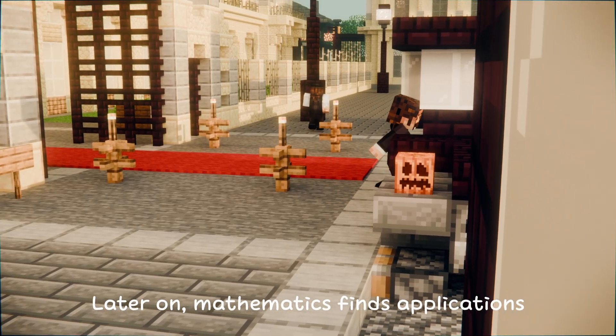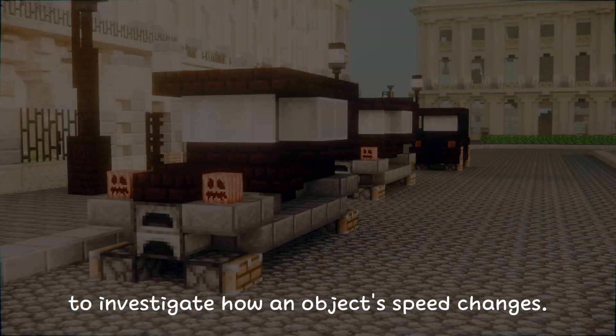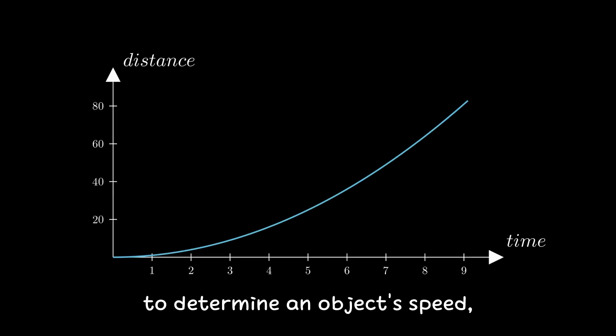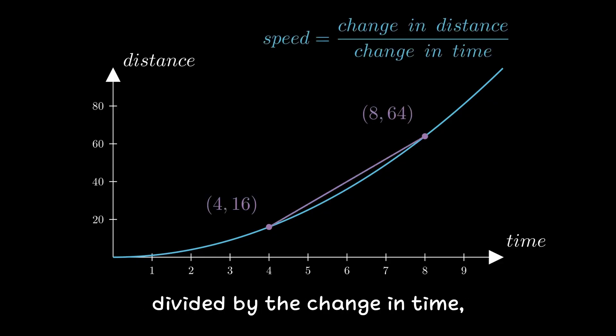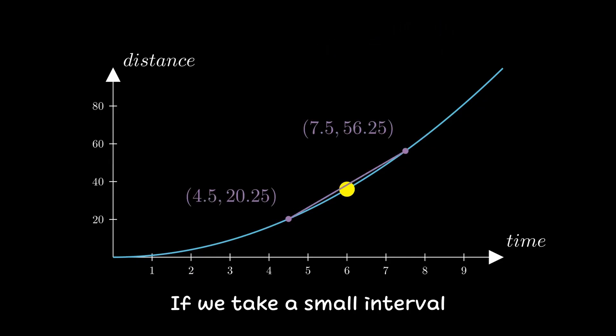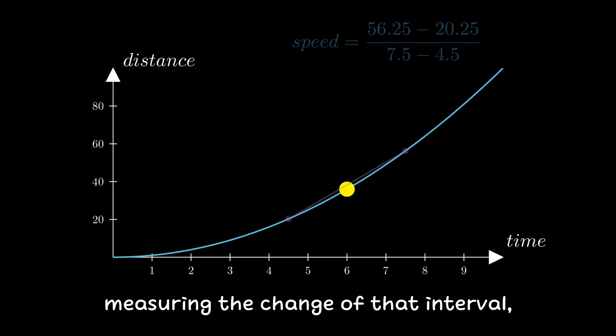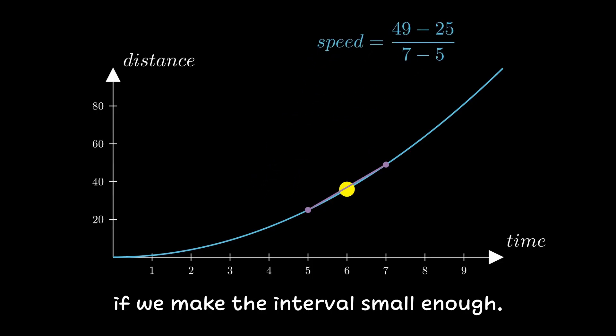Later on, mathematics find application in areas such as physics to investigate how an object's speed changes. In that case, we need two points in time to determine average speed, which is the change in distance divided by the change in time. But what about the speed at a specific point, say at precisely 6 seconds? If we take a small interval around that exact point, measuring the change of that interval, we can get a sense of the exact speed if we make the interval small enough.